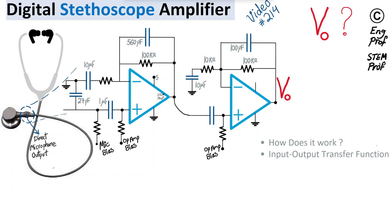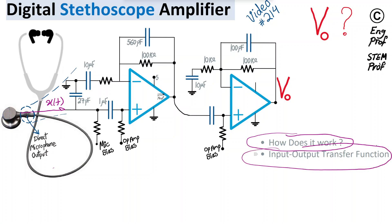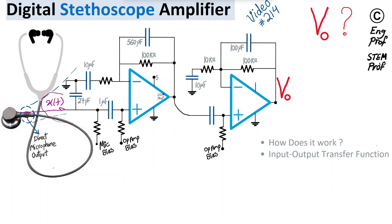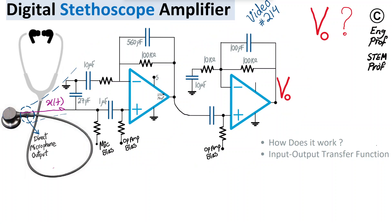Usually there is also a direct microphone output access before the amplifier — basically the signal x(t) coming from inside this unit from the microphone. There is usually direct access to it before amplification, but what we want to see is how this circuit works and what the input-output voltage transfer function is: the signal generated by the microphone comes in, is amplified by the first stage, further filtered and amplified by the second stage, and then we get the output. Both stages are doing filtering and amplification.